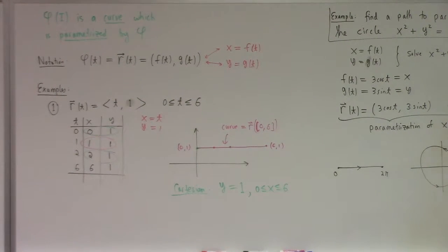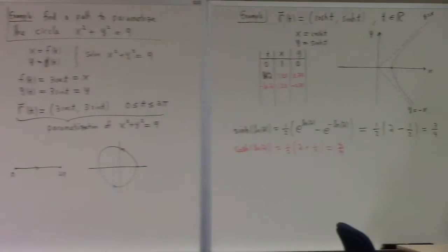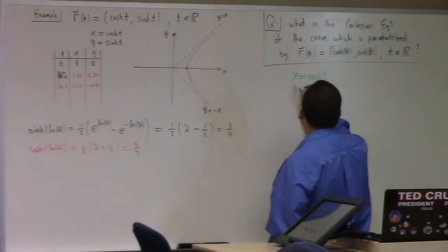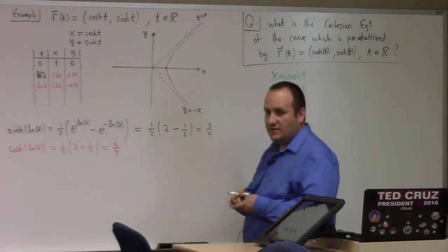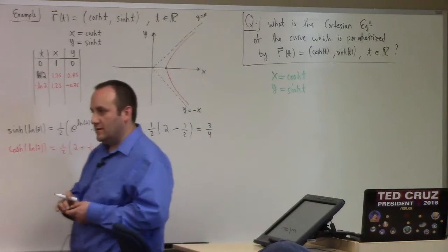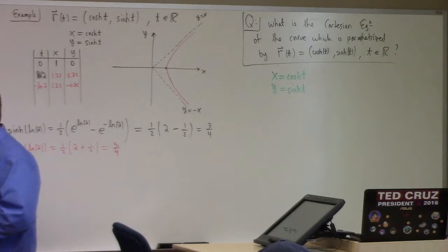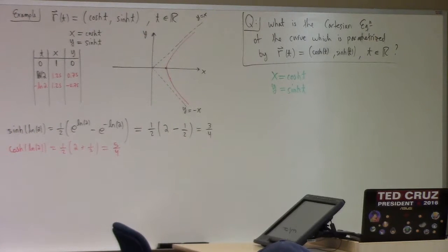So getting back to this question, what's the Cartesian equation? You've got x equals cosh t. If you're trying to find the Cartesian equation for a parametrically described curve, your goal is to eliminate the parameter by some method. And the method varies from problem to problem.